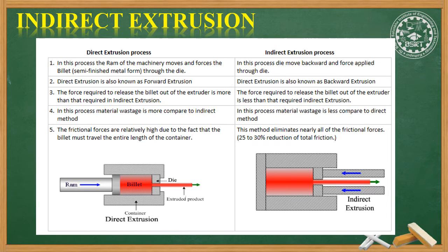Fifth, the frictional forces in direct extrusion are relatively high because the billet must travel the entire length of the container, and the die is at a fixed position. Whereas in indirect extrusion, this method eliminates nearly all the frictional forces — there are very few frictional forces in indirect extrusion. So that covers the comparison between direct extrusion and indirect extrusion processes.